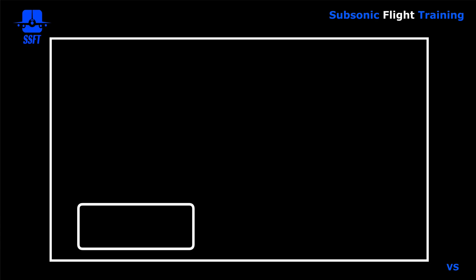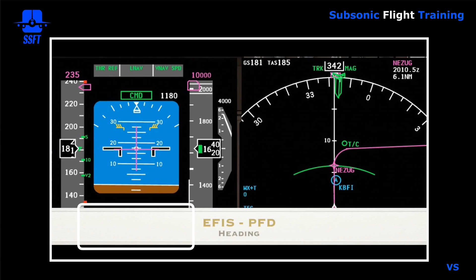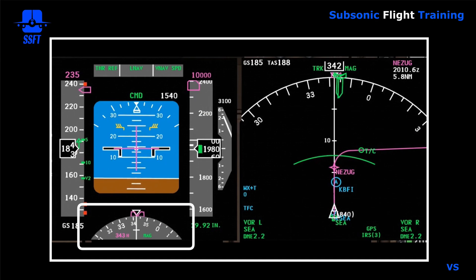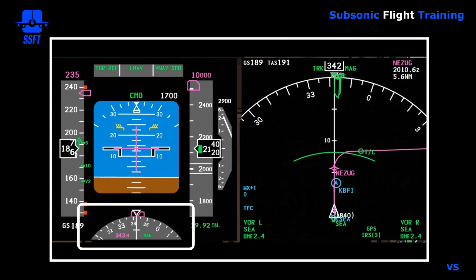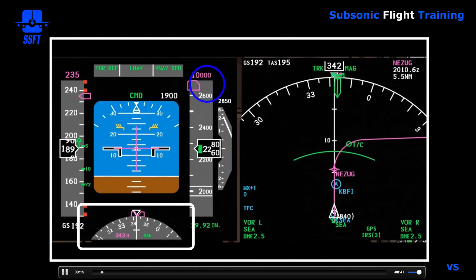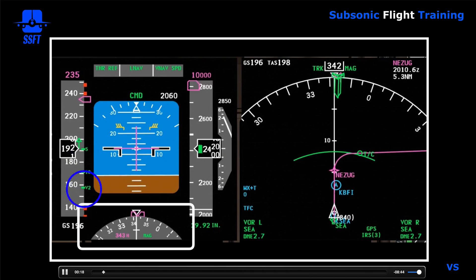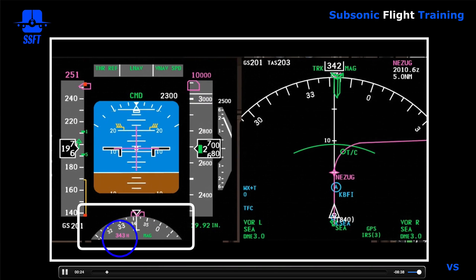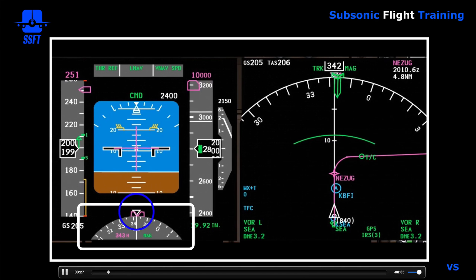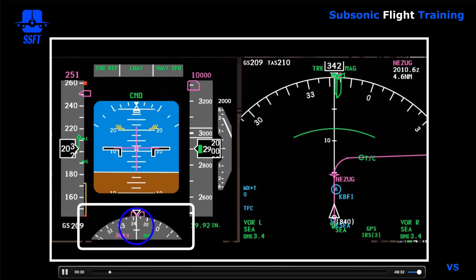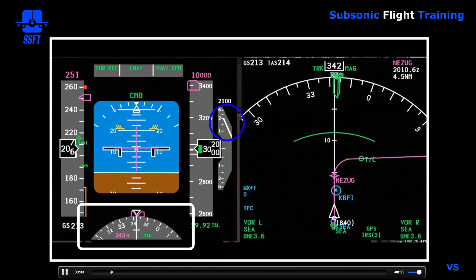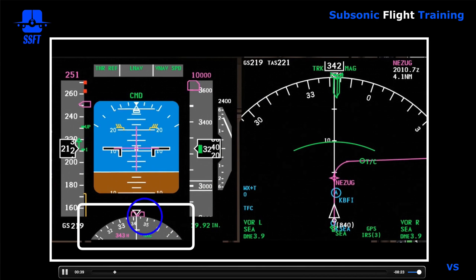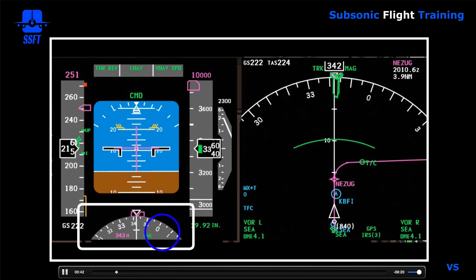Let's take a look at the virtual simulator and see this in action, looking at the PFD heading display. We're climbing out of 2,200 feet, climbing to 10,000 feet, and retracting flaps on takeoff. The selected heading marker is at 343, shown in magenta. It's a heading-up display, and the heading and track right now are identical because there is no wind — no wind vector is displayed. With no wind, the heading and the track will be exactly identical.